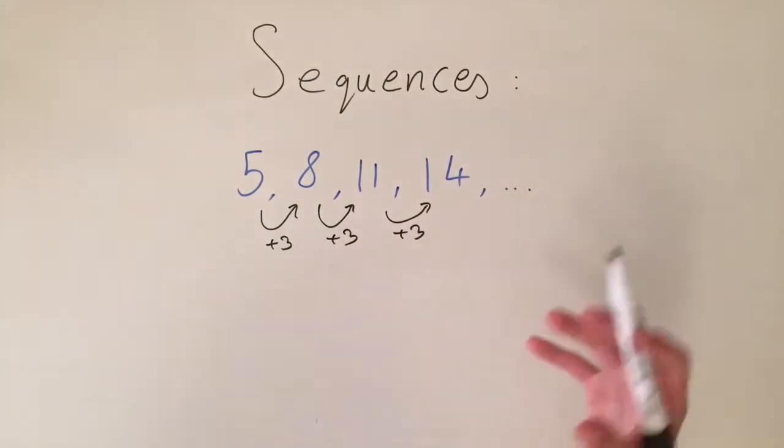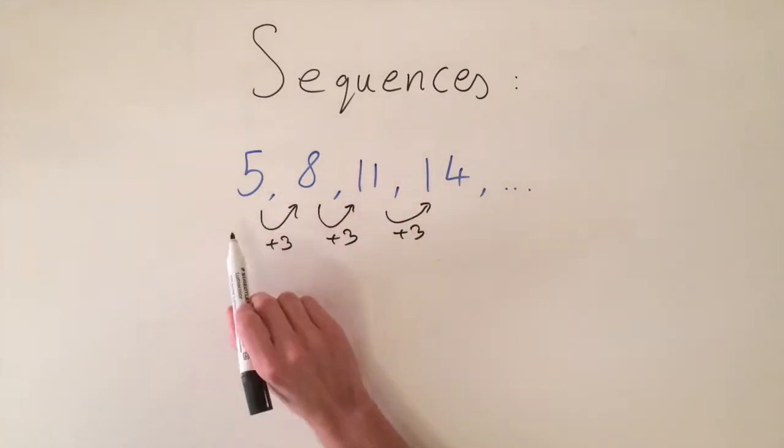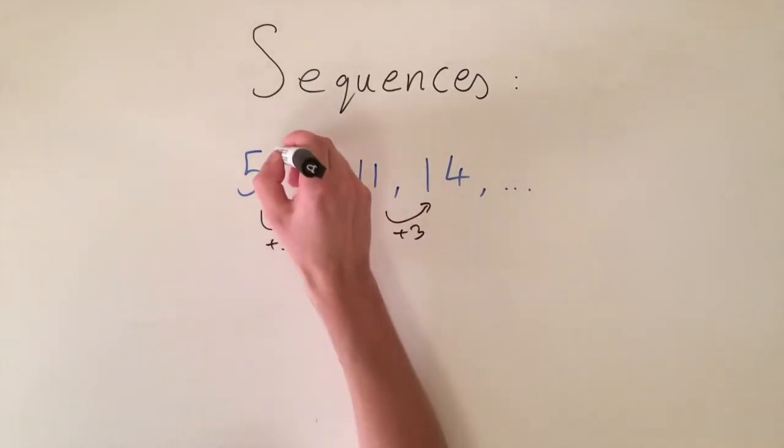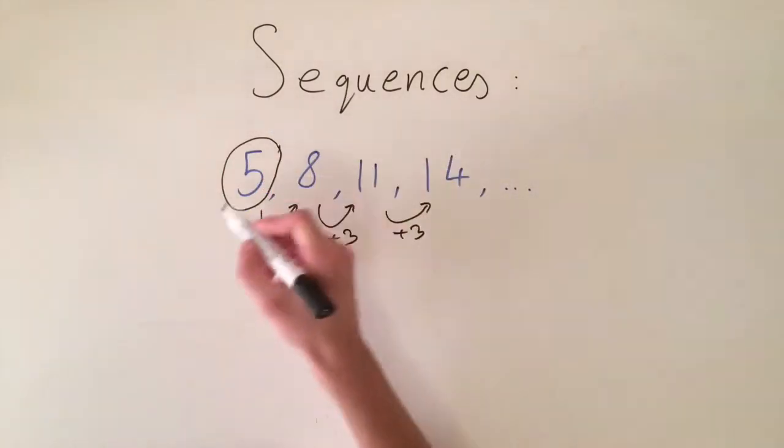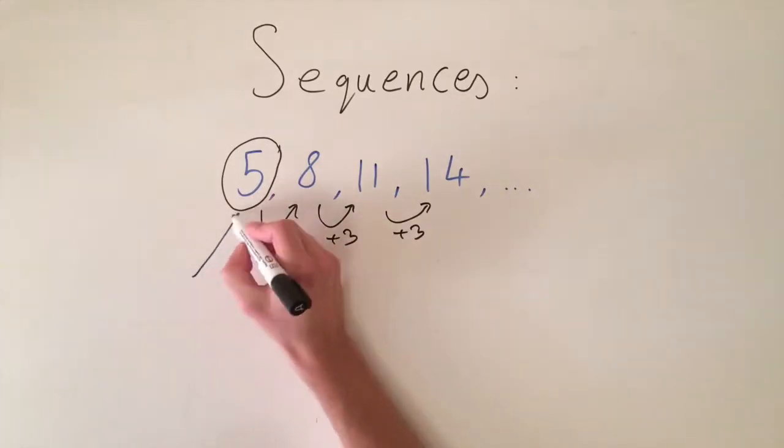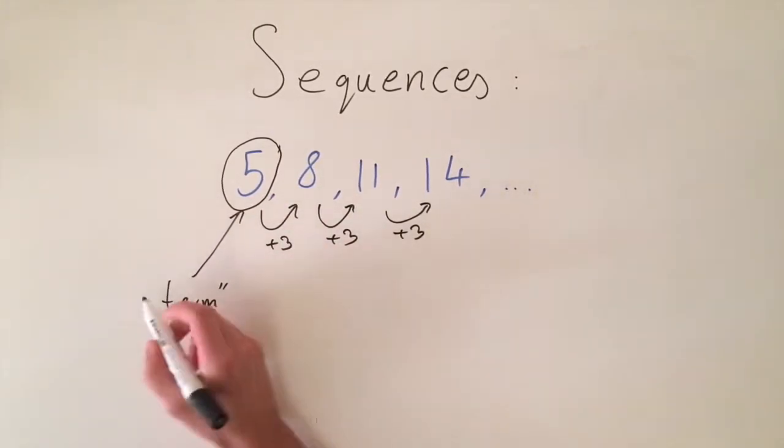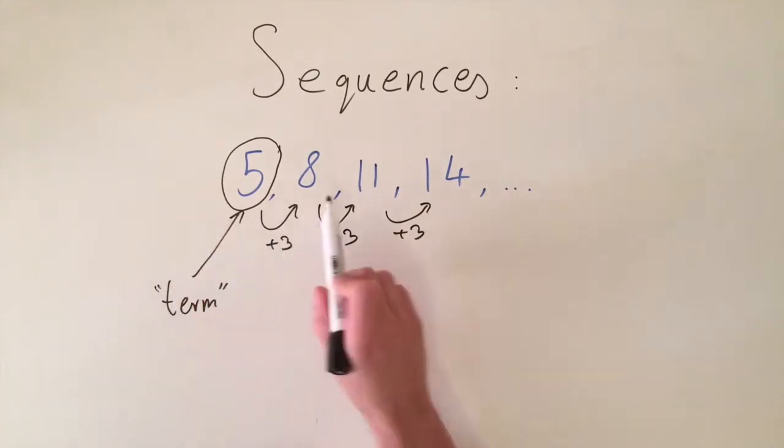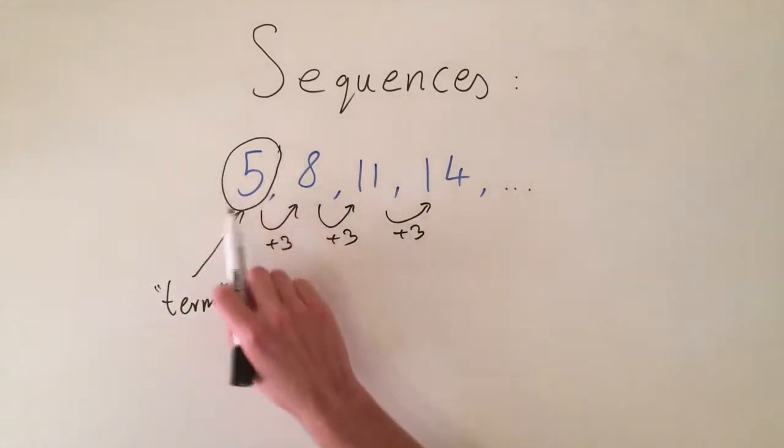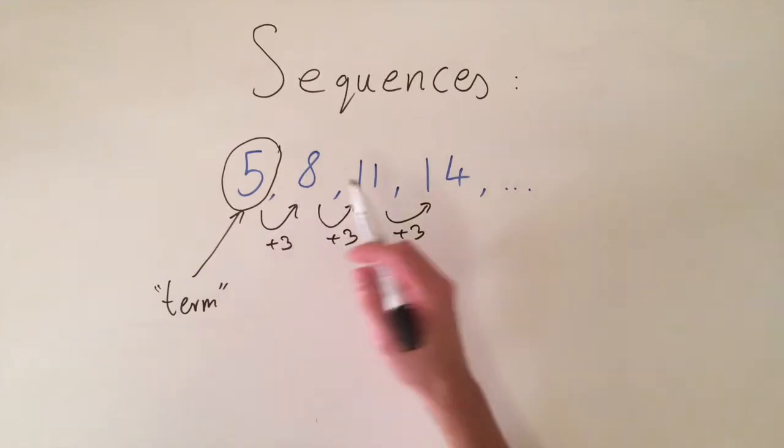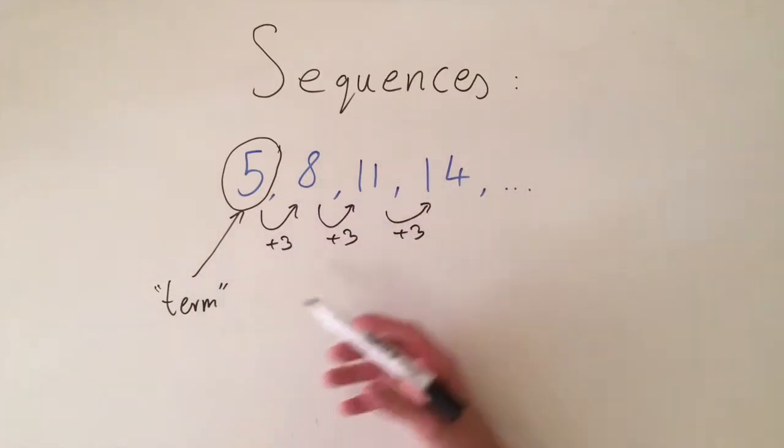First let's try and decompose what a sequence is. So we have a series of numbers and each number in the sequence, for example the first one, this is called a term. So this is what we call each number in the sequence. For example this is the first term, the second term, the third term, etc. throughout the whole sequence.